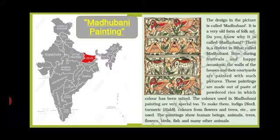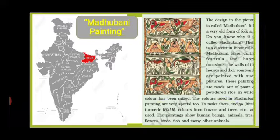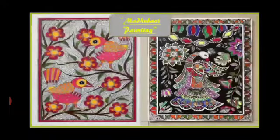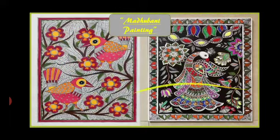This wall painting was made on the walls using natural colors. Look at this red color in the Indian political map — this state is called Bihar. The paintings show human beings, animals, trees, flowers, birds, etc.